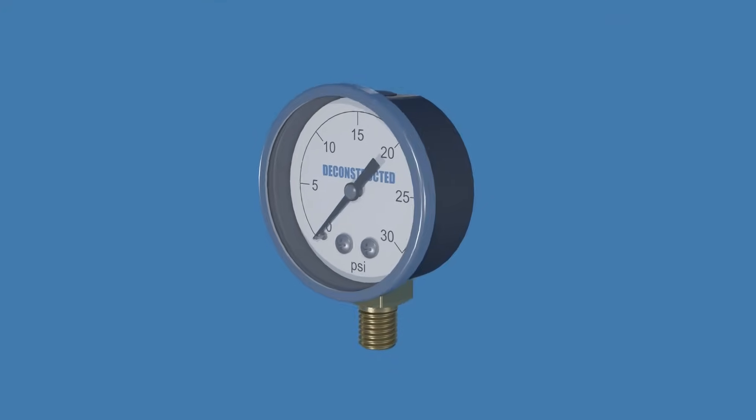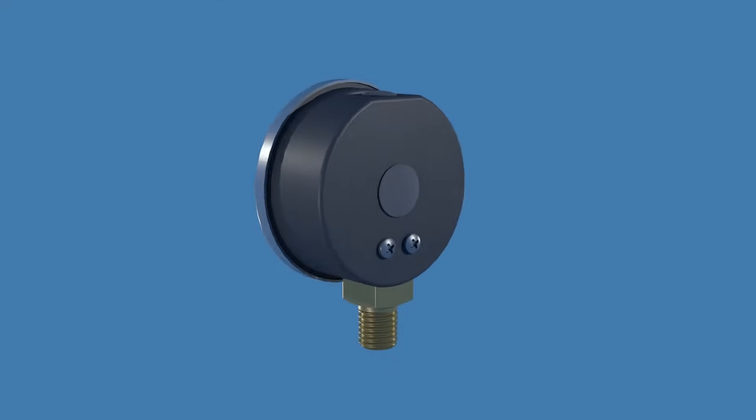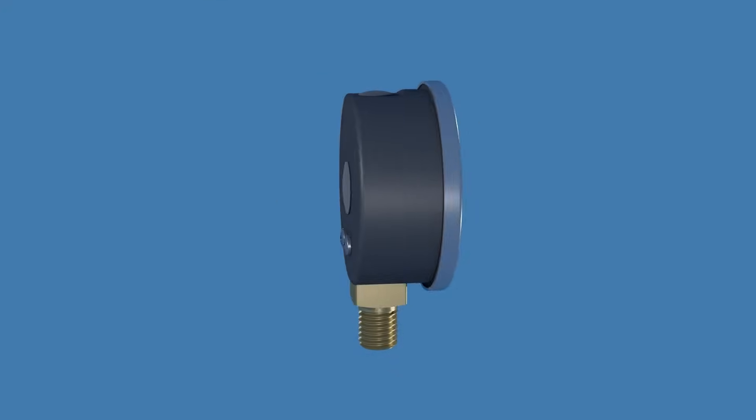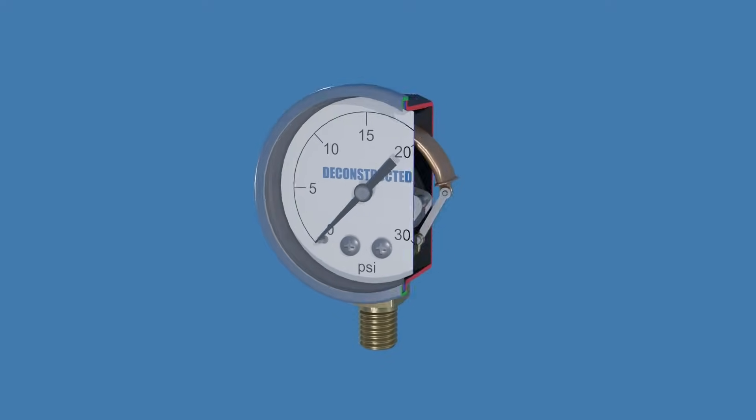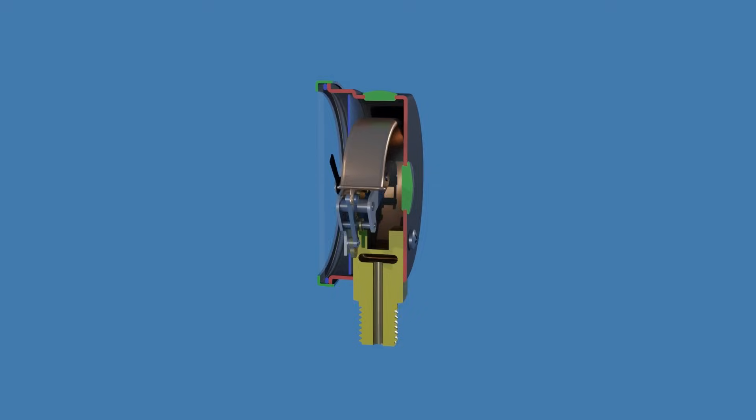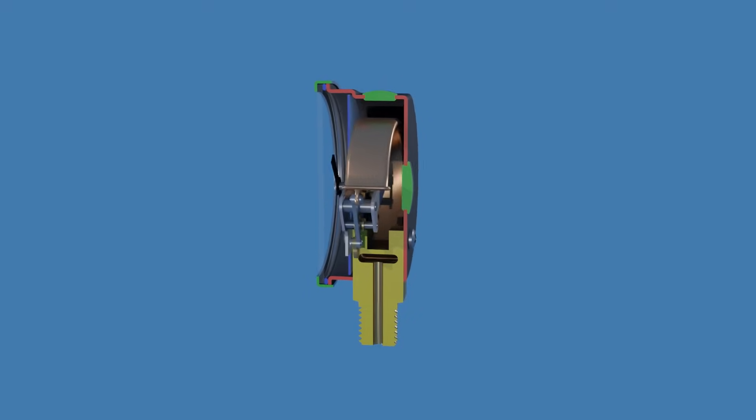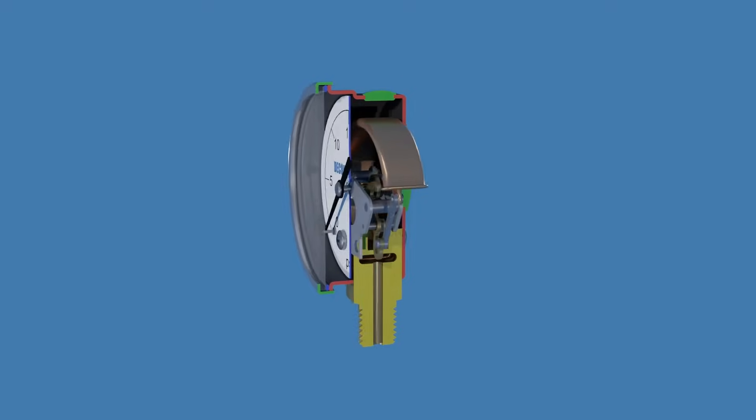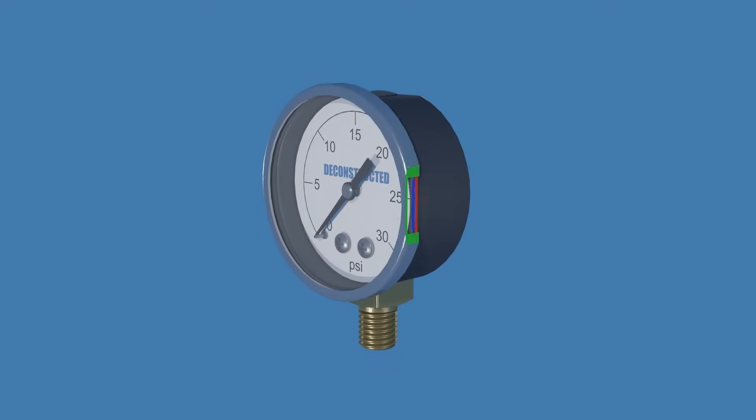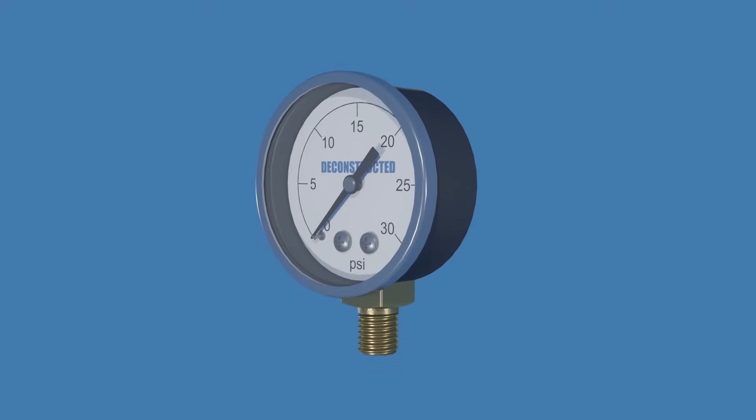This is a Bourdon tube type pressure gauge. It is a mechanical pressure measuring instrument that operates without electricity. In this video, we'll take a close look at the mechanism inside to see how it works. Before we jump into the inner workings of a pressure gauge, let's first see what the key external components are involved. Let's get started.